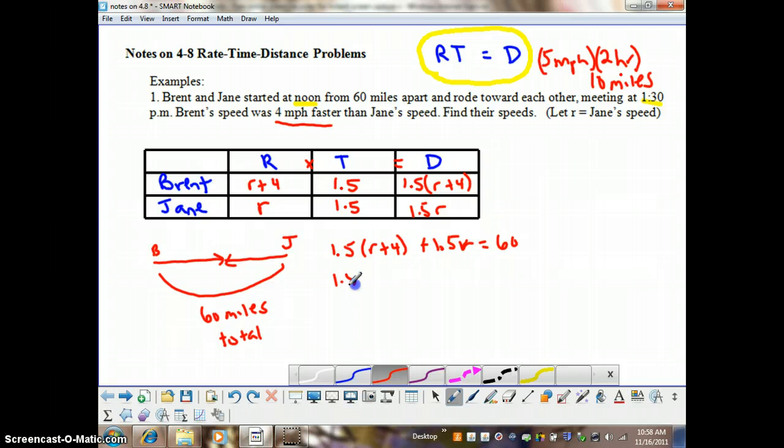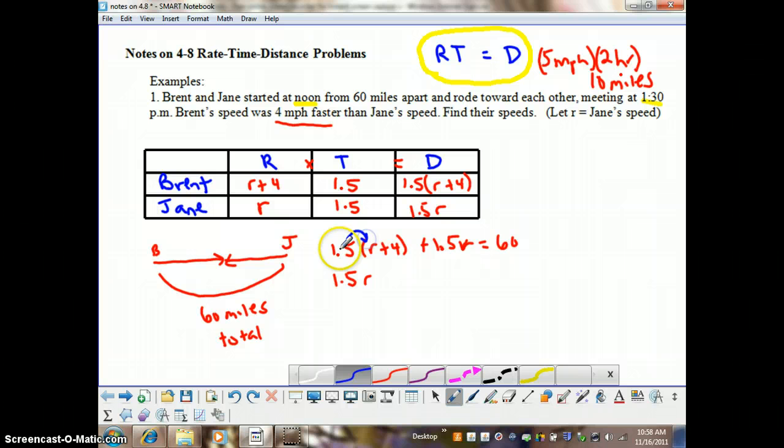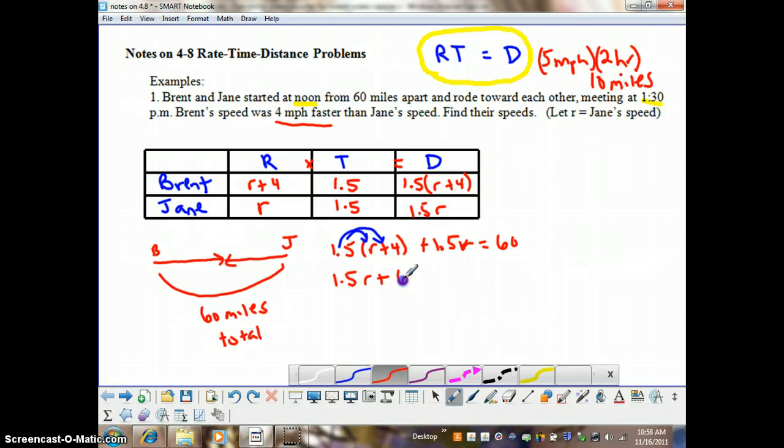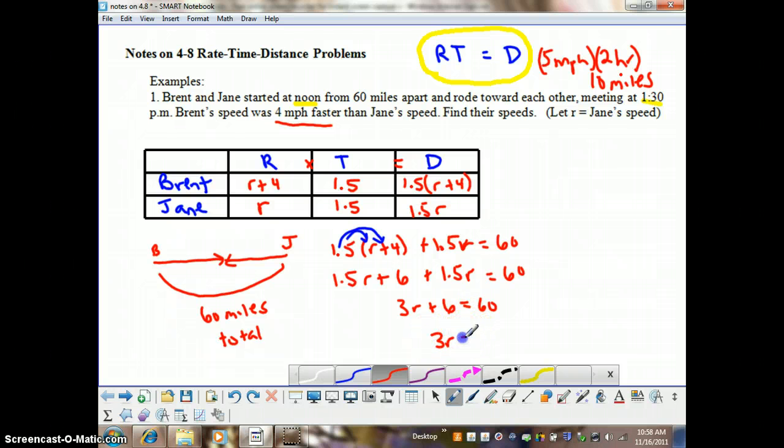And so, we're going to solve this by, first of all, distributing, multiplying the 1.5 times the r and the 1.5 times the 4. So, we have 1.5r plus 6 plus 1.5r equals 60. Combining the 1.5r's, combining the like terms, we have 3r plus 6 equals 60. And then we subtract 6 from both sides. We have 3r equals 54.